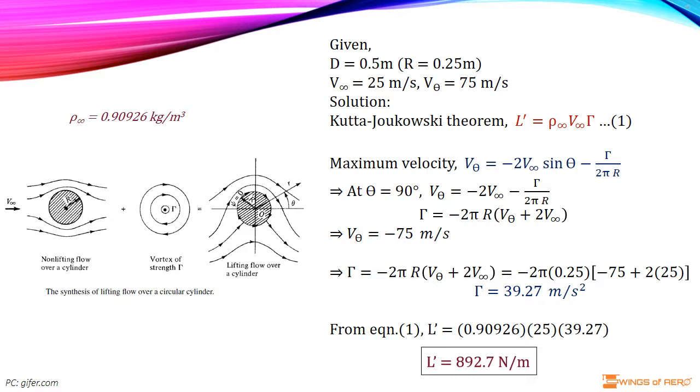So, at first find Γ. The maximum velocity occurs at the top of the cylinder, where θ is 90 degree. Then the velocity on the surface of the cylinder is given by V_θ equals minus 2V∞ sin θ minus Γ divided by 2πR. Where at 90 degree, V_θ will be minus 2V∞ minus Γ divided by 2πR.